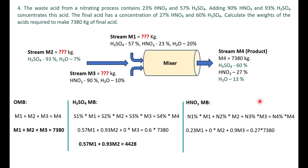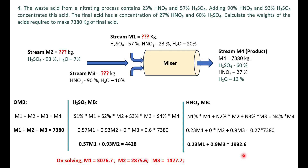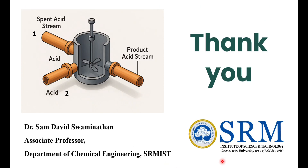The final equations are: 0.57·m1 + 0.93·m2 = 4428 (sulfuric acid balance) and 0.23·m1 + 0.9·m3 = 1992.6 (nitric acid balance), along with the overall balance. Solving these three equations using a calculator equation mode gives m1 = 3076.7 kg, m2 = 2875.6 kg, and m3 = 1427.7 kg. I hope you understood the problem-solving involved in mixer mass balance. We'll meet in the next lecture — thank you.